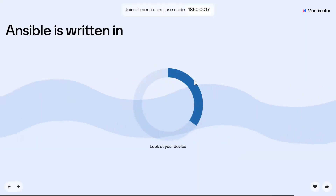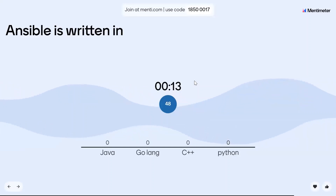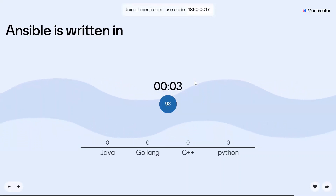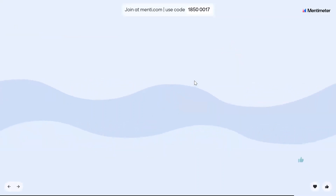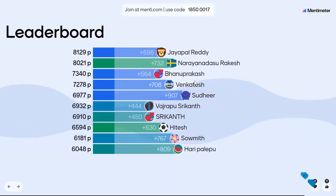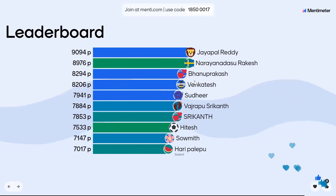Ansible is written in — okay — Python. Jaypal, Rakesh, Vanu Prakash. Final question.